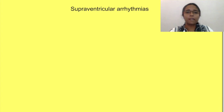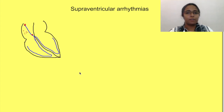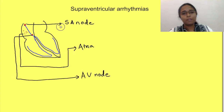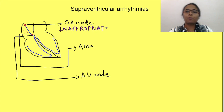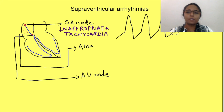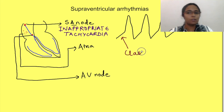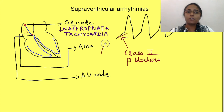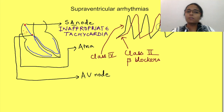In supraventricular arrhythmias, the cause can be at the level of the SA node, atria, or AV node pathway. At the SA node level, the first cause is inappropriate tachycardia — it occurs due to an increased number of impulses generated by the SA node at rest or out of proportion to the intensity of exertion. To treat SA node arrhythmias, we use either class 2 drugs (beta blockers) to decrease the slope of phase 4, or class 4 drugs (calcium channel blockers) acting on phase 0, ultimately decreasing the number of impulses generated.